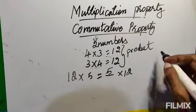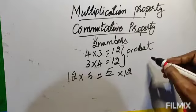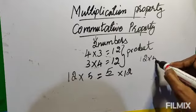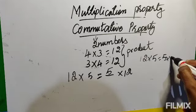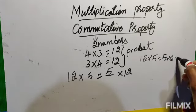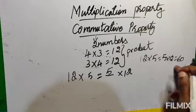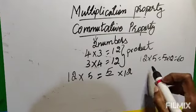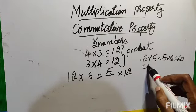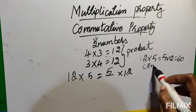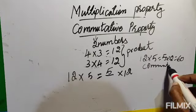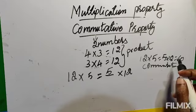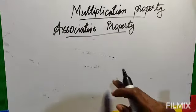It can also be asked like this: 12 × 5 = 5 × 12 = 60. What is the property used here? The name of the property used here is commutative property. So you must know the name of the property.